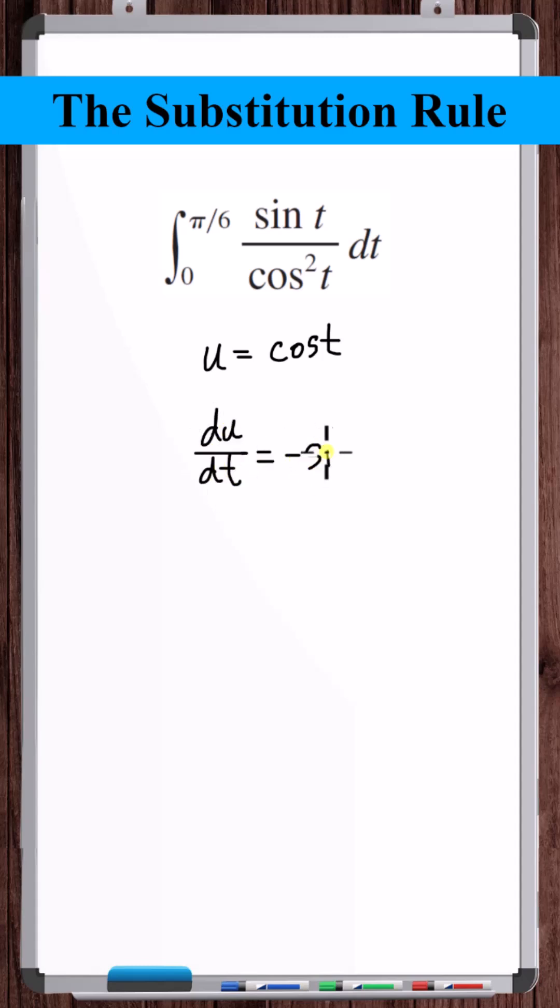Therefore, du dt is equal to minus sine t. If we treat du and dt as differentials, then we can write that du is equal to minus sine t dt.